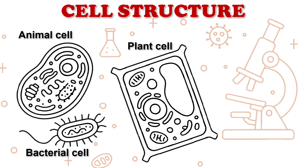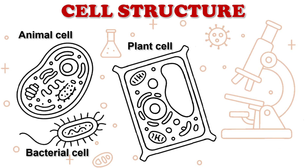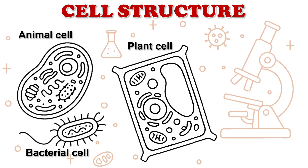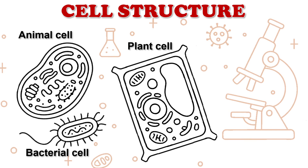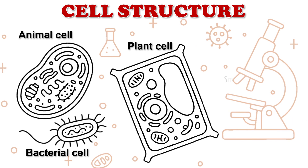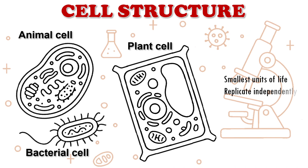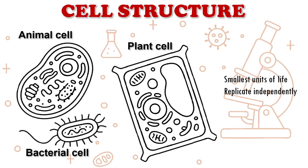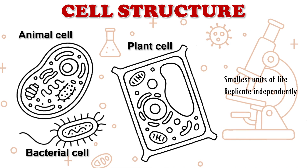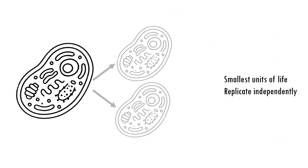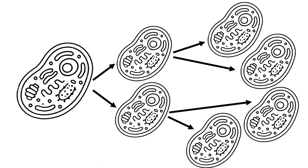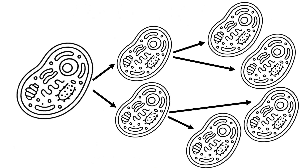Let's start with the basics. What are cells? You can think of cells as the basic building blocks of life. They are the smallest units of life that can replicate independently. If we took an animal or a plant, their cells can divide into two, then four, and so on. This process allows the organism to grow or repair itself.